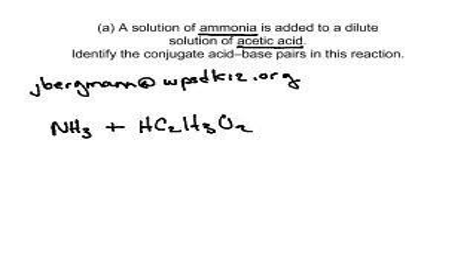Our first question here is ammonia is added to dilute solution of acetic acid. So here we have ammonia, which is NH3, and it's going to react with a dilute solution of acetic acid, which would be HC2H3O2. You don't dissociate the acetic acid because it's a weak acid.